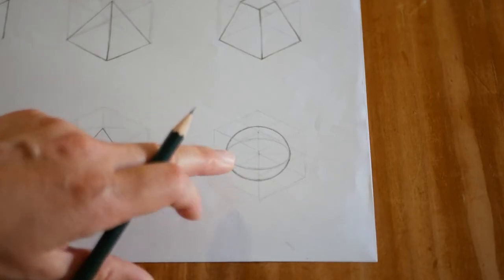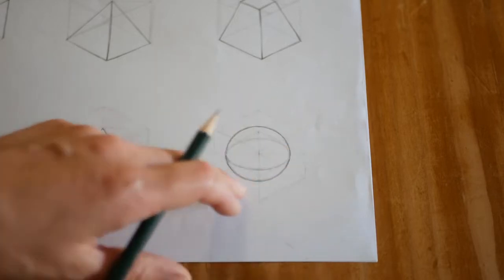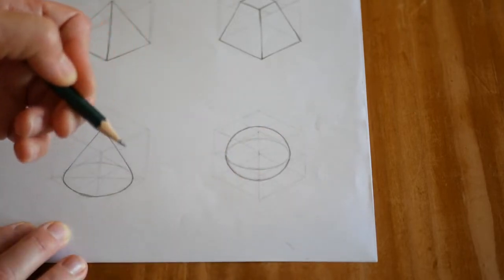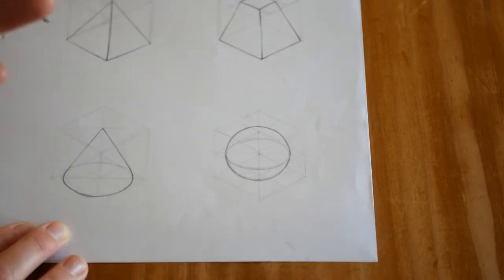Our final shape and maybe the most challenging shape is our sphere. It really is just a circle, but we're going to map it out so it fits nicely in our cube. What we'll do later is shade it to give it a sense of a 3D form.